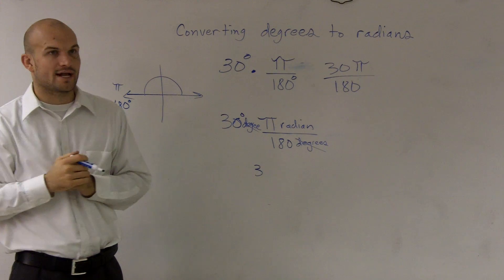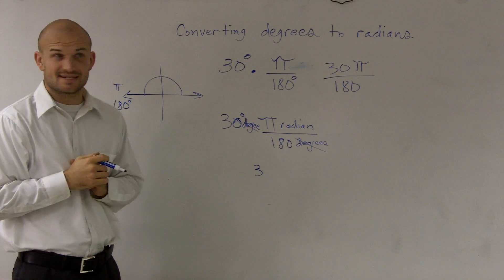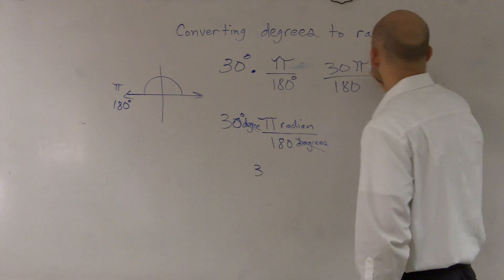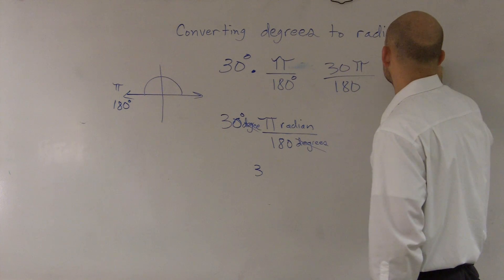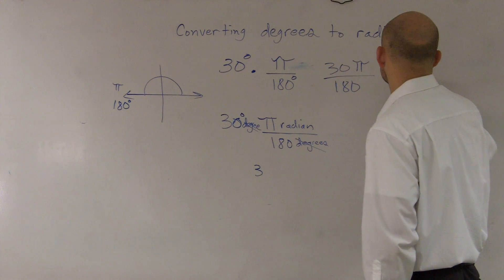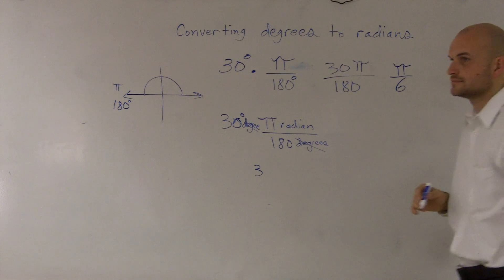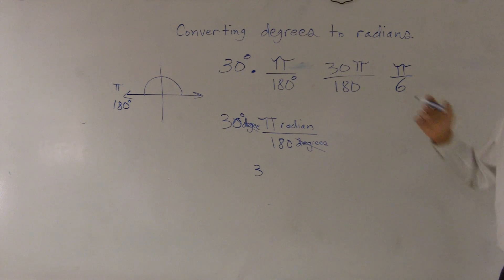So 30 goes into 180, what is that? Six times? Yeah, six. Well, think about it. What I'm doing is dividing the top and bottom by 30. So yes, it could be 10 over 60, which reduces down to 1 over 6. So therefore, it's pi over 6 radians.